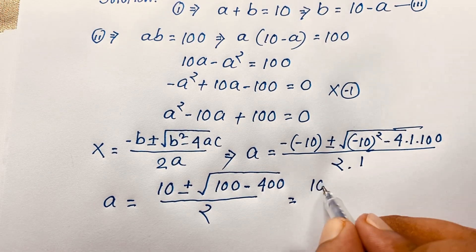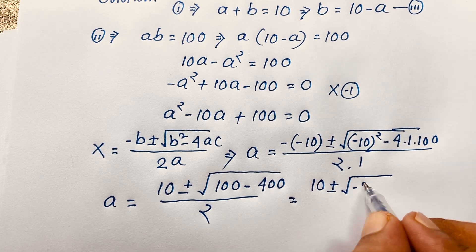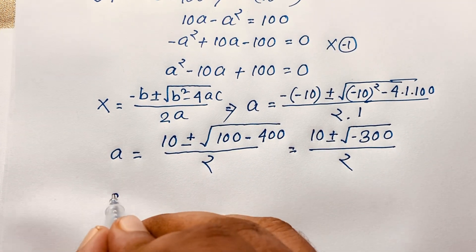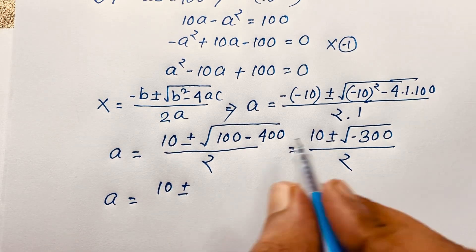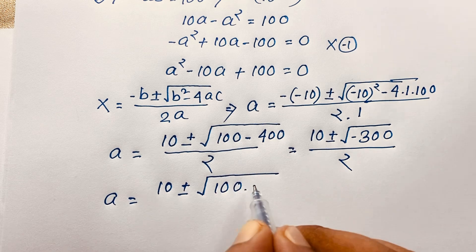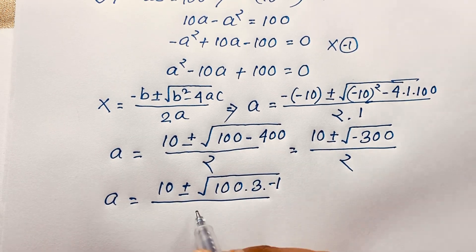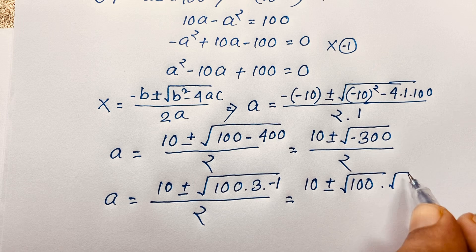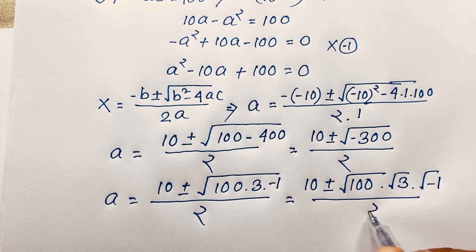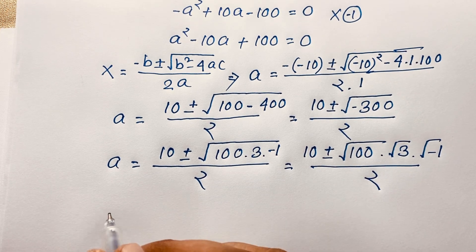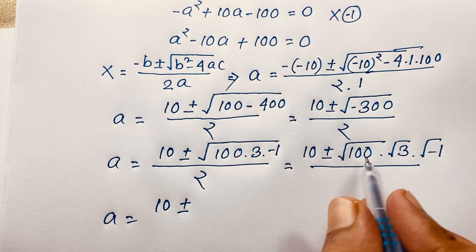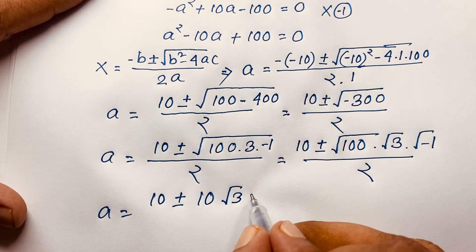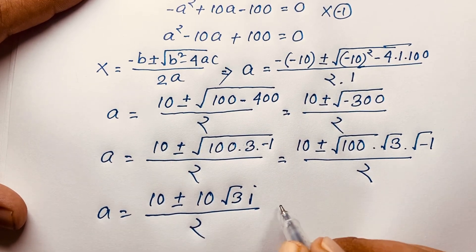So a equals 10 plus or minus square root of negative 300, over 2. We can write square root of negative 300 as square root of (100 times 3 times negative 1), which simplifies to 10 times square root of 3 times i, since square root of negative 1 equals i — a complex number.